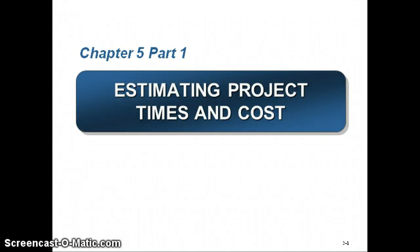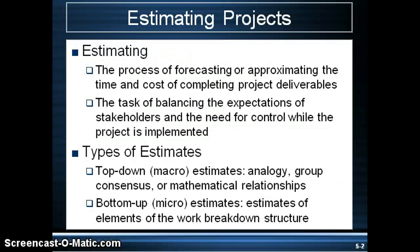Here we go with chapter five. I'm going to break this into two parts, so this will be part one of estimating project times and costs. With the project scope statement and the WBS completed, you now have the information to forecast the project timeline and cost. The estimating process may actually be done several times at the beginning of the project and updated throughout the life of the project as it progresses.